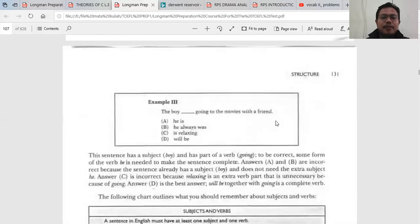The boy [blank] going to the movies with a friend. 'The boy' is a subject. Going is a present participle but it is not a verb yet because there is not 'to be,' so we need a verb or at least a part of verb. A 'he is' is wrong, 'he always was' wrong, 'it's relaxing' wrong. So the right answer is [D] 'will be going to the movies.'